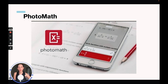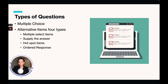Let's go over the types of questions you will see on the exam. You're going to have your basic multiple choice question where you have a question and four or five answers and you choose the correct one. You will also have alternative items — there are four types: multiple select items (also known as select all that apply), supply the answer questions with a blank box where you write in the answer, hotspot items where you click on a specific area, and ordered response questions.